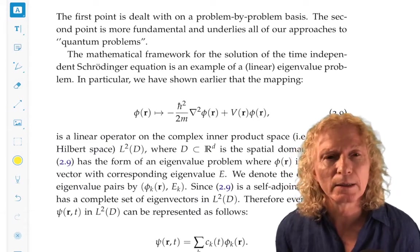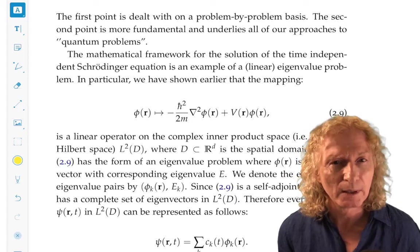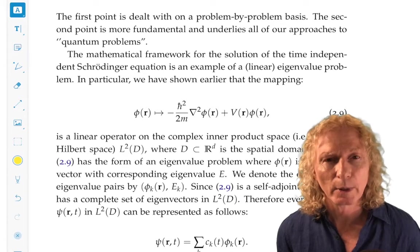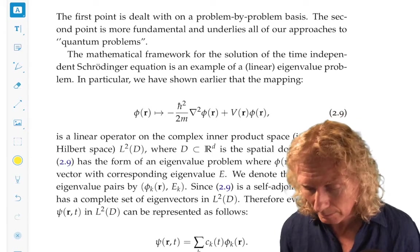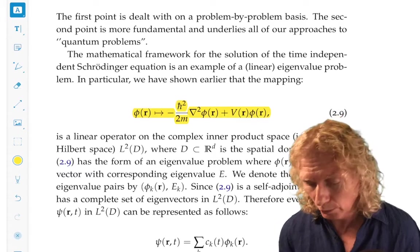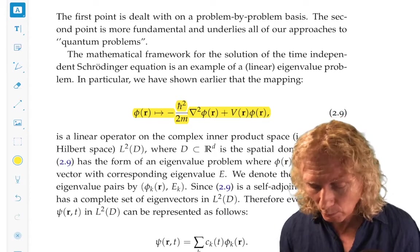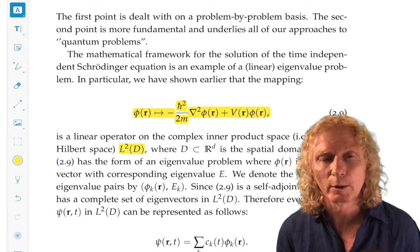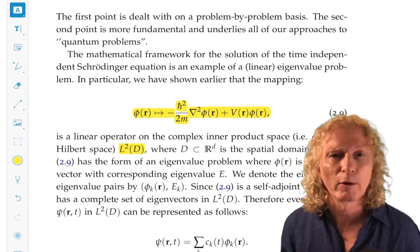Now, we want to look at the time-independent Schrödinger equation a bit more closely, because we can see that that's where the difficulty will lie in solving the Schrödinger equation when the potential energy function is independent of time. So let's look at the map that sends φ(r) to this object. That is a linear operator. On what space? L² of D, the square integrable functions on the domain D, spatial domain D, with the inner product that we've already defined.